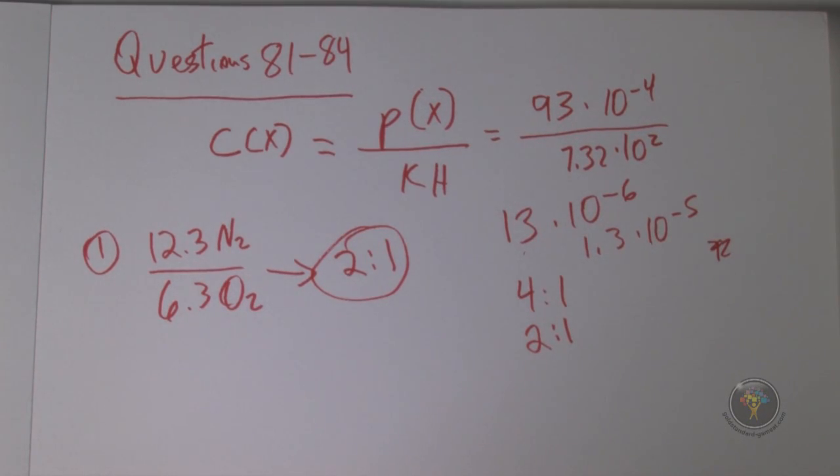Question 84: deep sea divers use a mixture of helium and oxygen because it's much less dissolved in blood. Which of the following is the best estimate of the percentages of the gases in the mixture? To find a percentage, you take the concentration of one part and divide it by the amount of all of it.